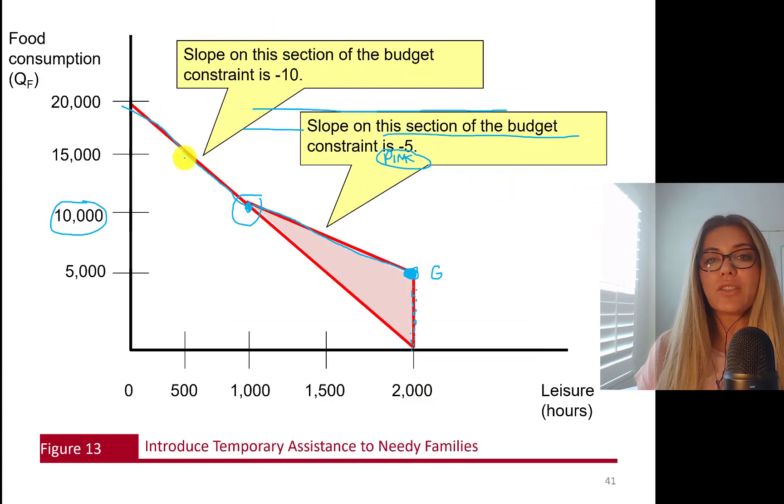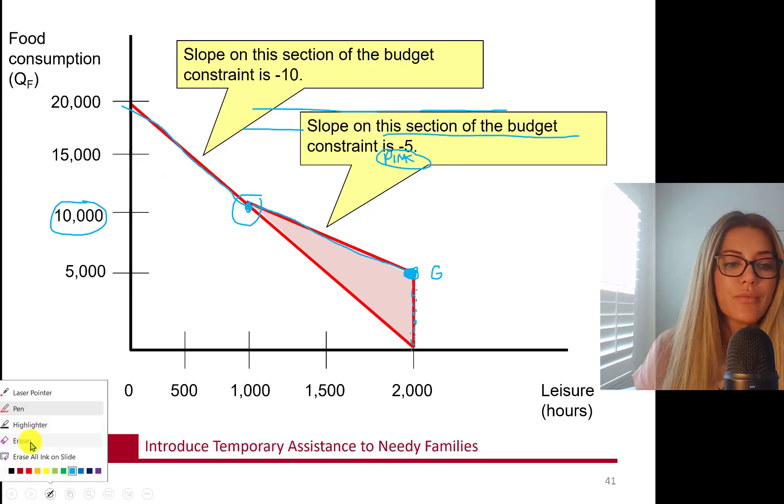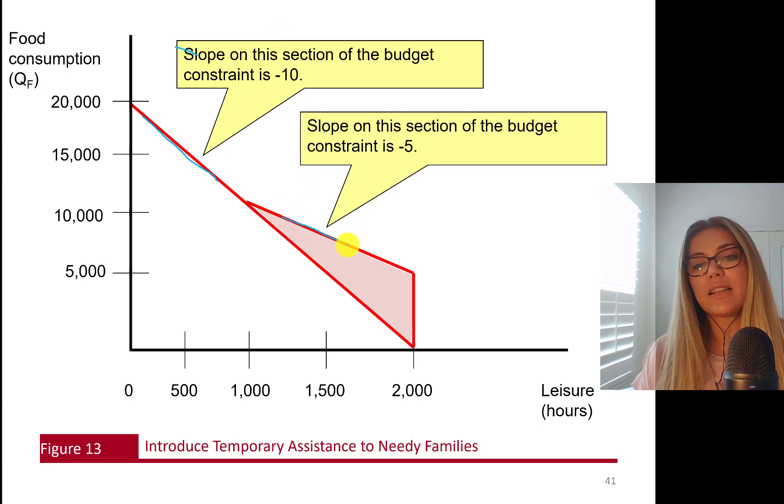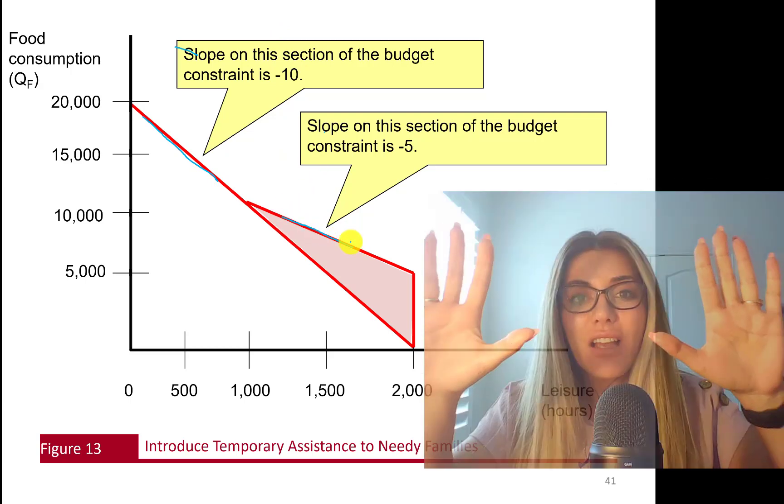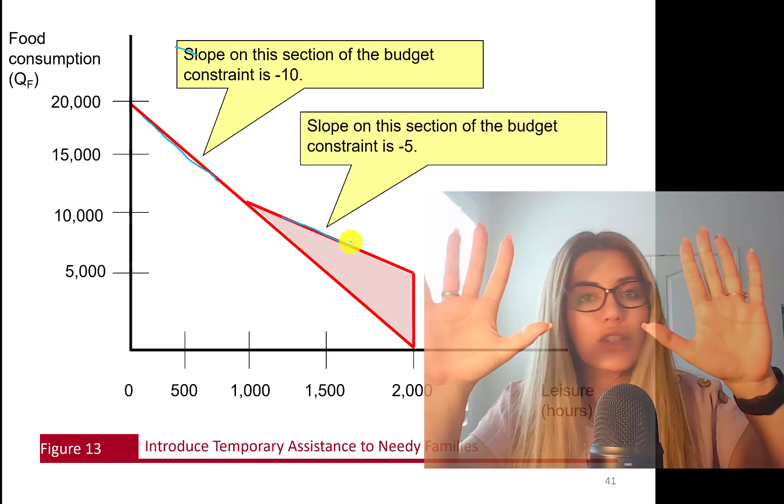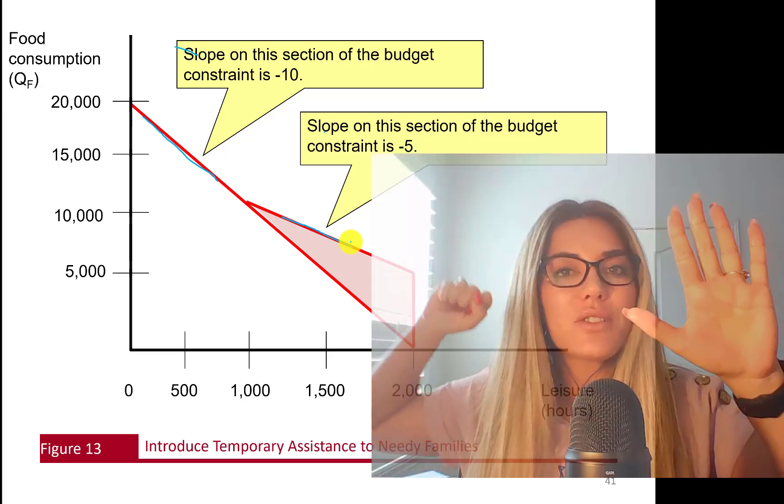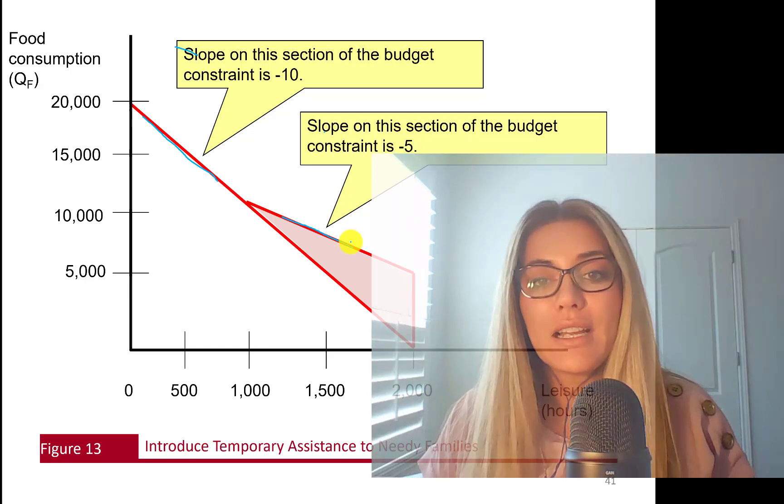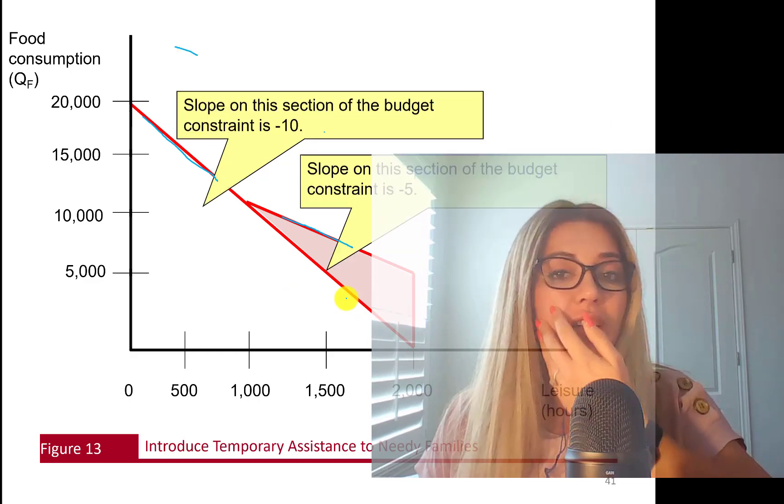Slope in this section is 10. The regular budget, the initial budget line slope was 10. So slope here is negative 10. Slope in this section is negative 5. Why? Every hour you work, you make $10, right? No, you don't. Benefits are reduced by half. You're actually, your real wage is $5. So budget line becomes flatter.